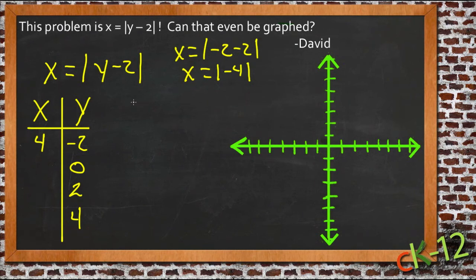So then if y is 0, we get x equals the absolute value of 0 minus 2. Well, that's negative 2, so x is the absolute value of negative 2. So x would be 2 if y is 0.